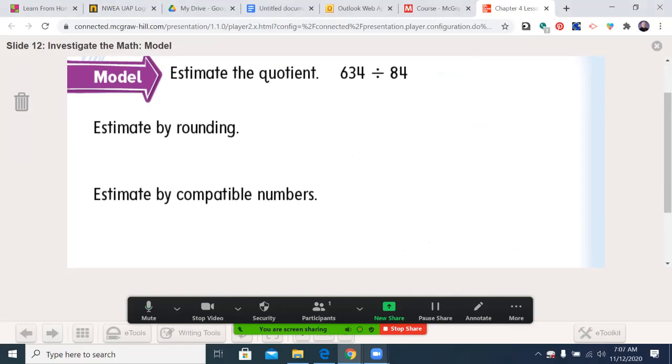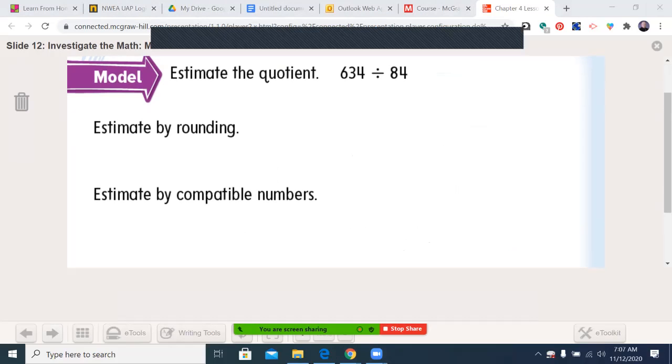First, let's do it by rounding. And I'm going to grab my annotation tool again. And I'm going to round 634 to the nearest 100, which is 600. And I'm going to use that as division because I do not have a little division thing on this. And 84, I'm going to go to the nearest 100 again. I could have chosen to round to the nearest 10, which would be 80. But does 80 go into 600 easily? No. So we opted to go to the nearest 100's place.